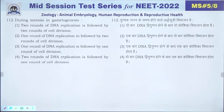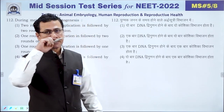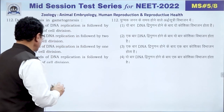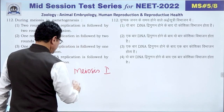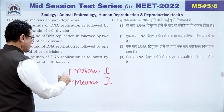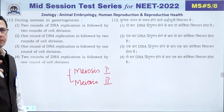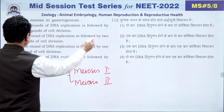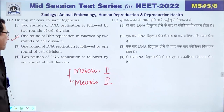Question 112: During meiosis in gametogenesis, DNA replication occurs only once but cell division occurs twice — meiosis I and meiosis II. One round of DNA replication is followed by two rounds of cell division. This is the key event during gametogenesis. The answer is 2.